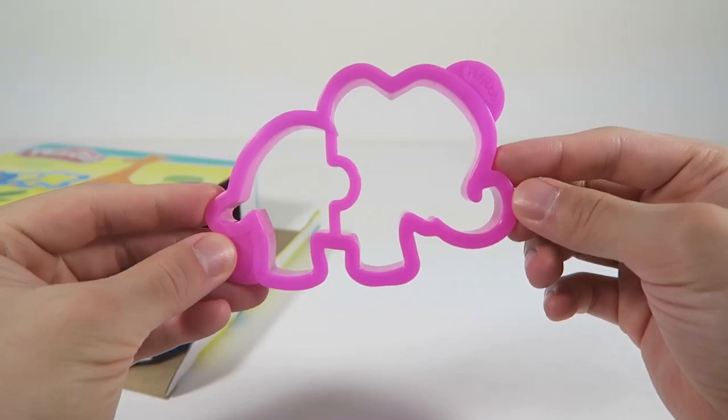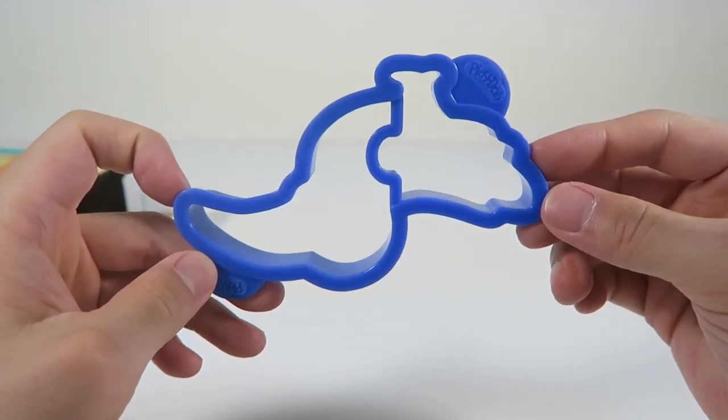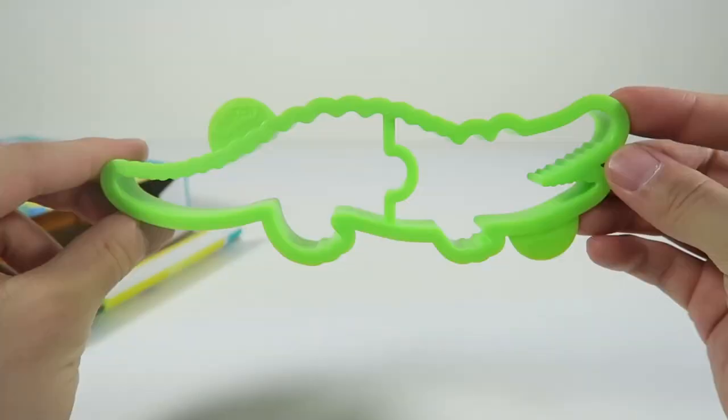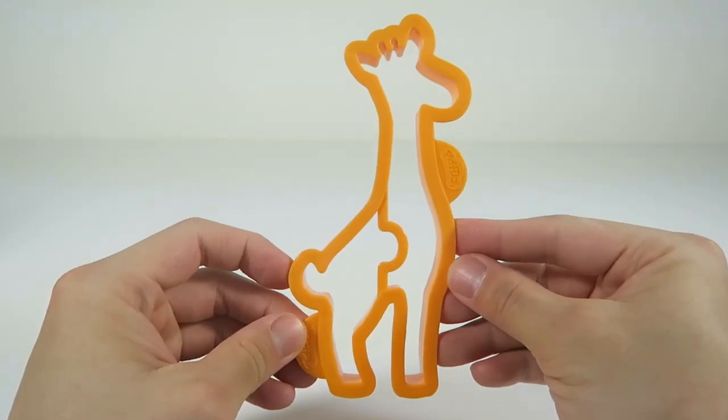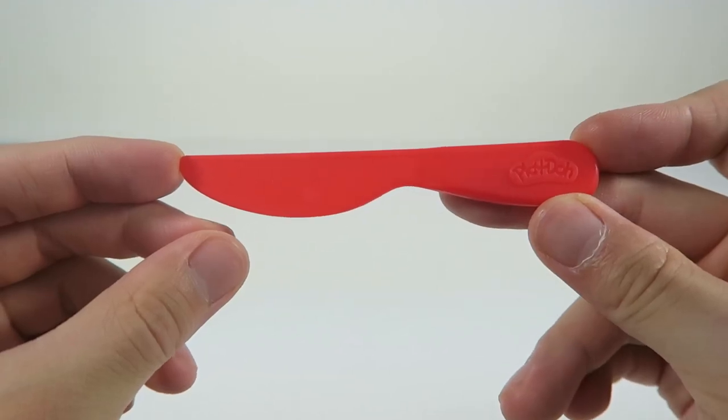This is an elephant mold, a toucan mold, a hippopotamus mold, a crocodile mold, a lion mold, and a giraffe mold. It also comes with a Play-Doh cutter.